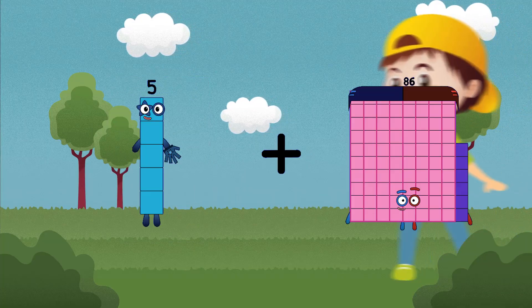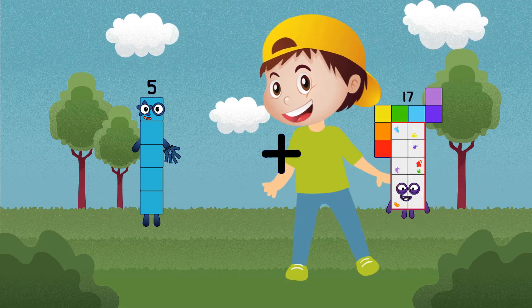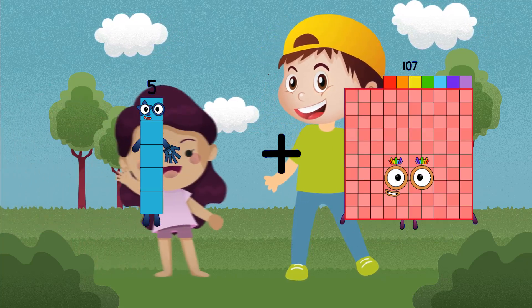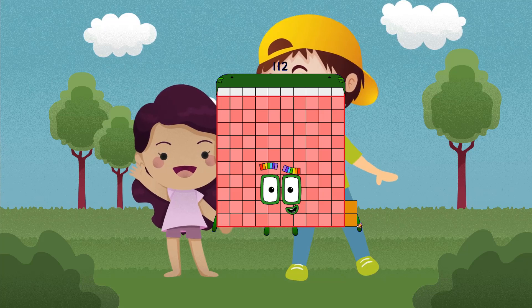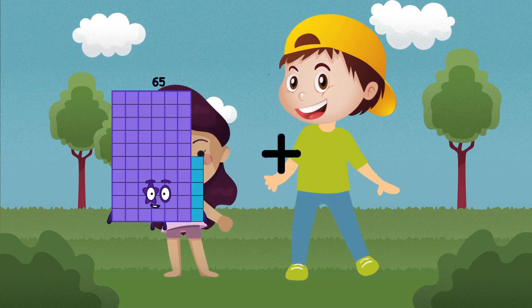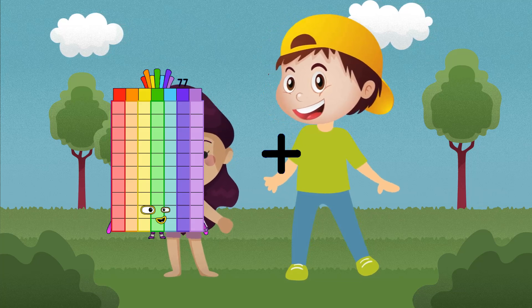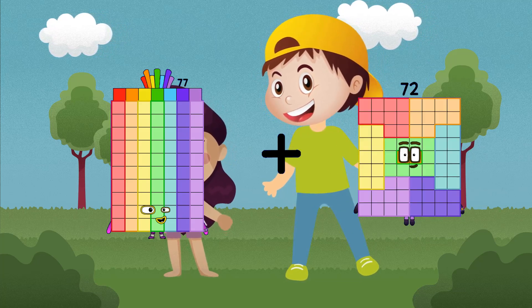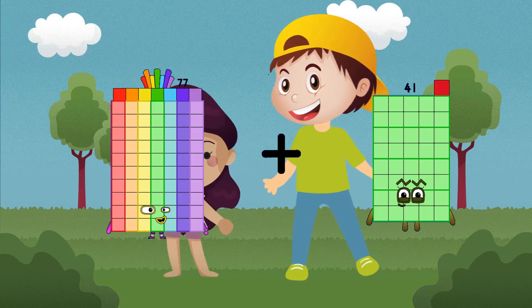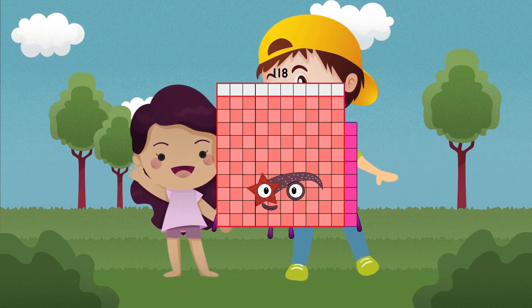5 plus 107 equals 112. 77 plus 41 equals 118.